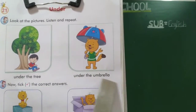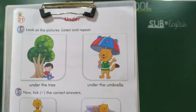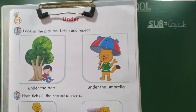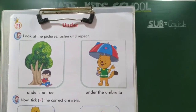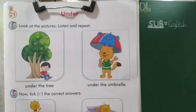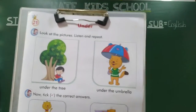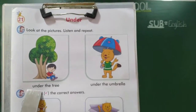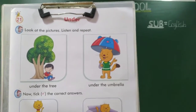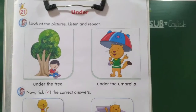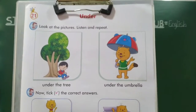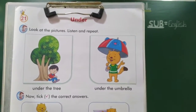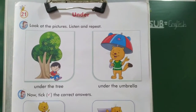Under the umbrella. Aat hai cat kai aahe — cat umbrella cha khali aahe na? Yes, umbrella cha khali. Under the umbrella. Under manje kai — vastu cha khali. Tumhi lapa cha kekhe ta na — tumcha bed cha khali so lapa ta na? Ho na? Under the bed. Okay.